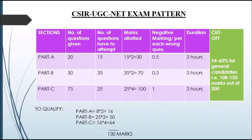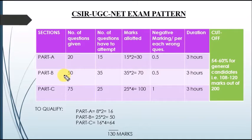These are the basic examination patterns for the CSIR examination. There are three major sections: Part A, Part B, and Part C, as you can see in the table. There are a maximum of 20 questions in Part A, 50 in Part B, and 75 questions in Part C.